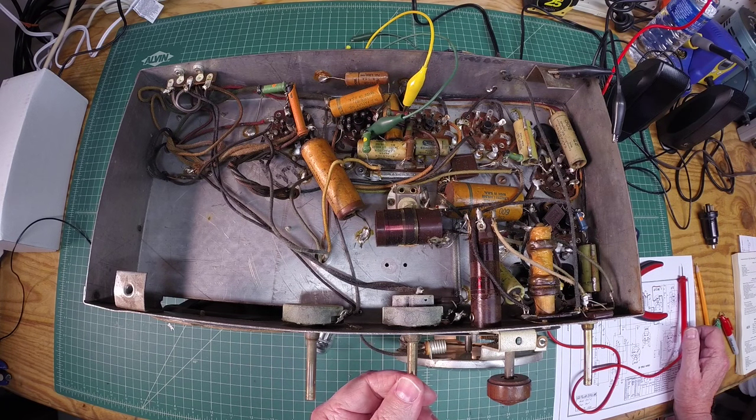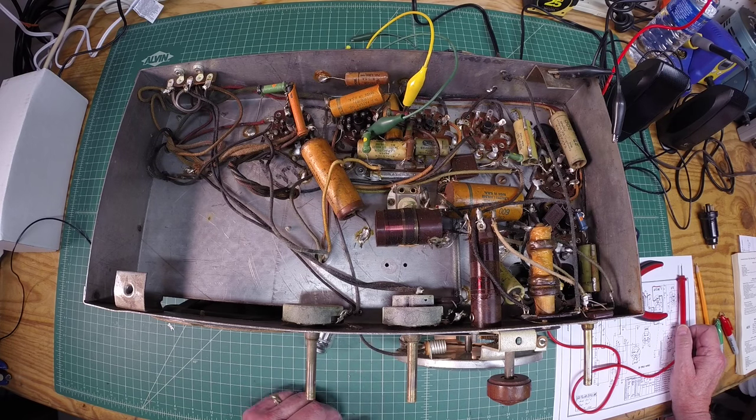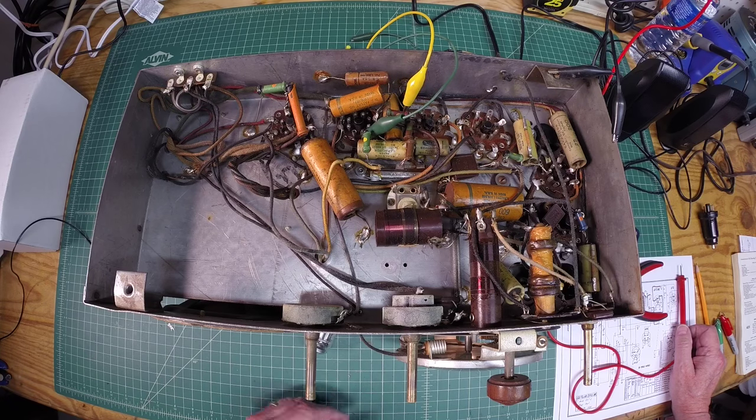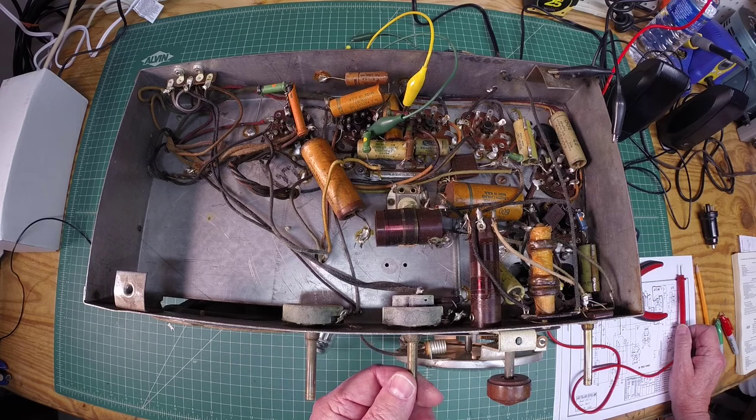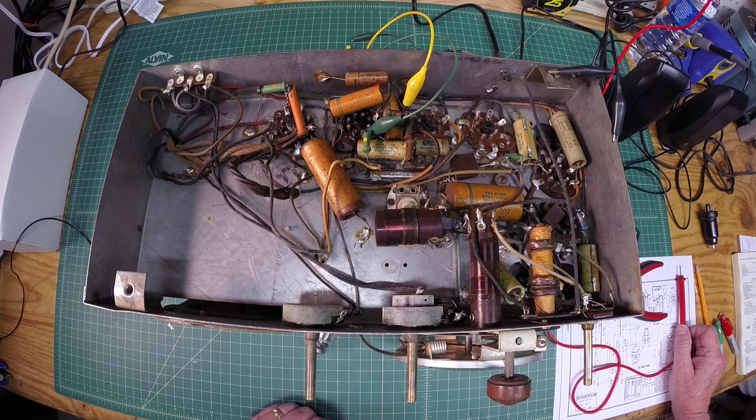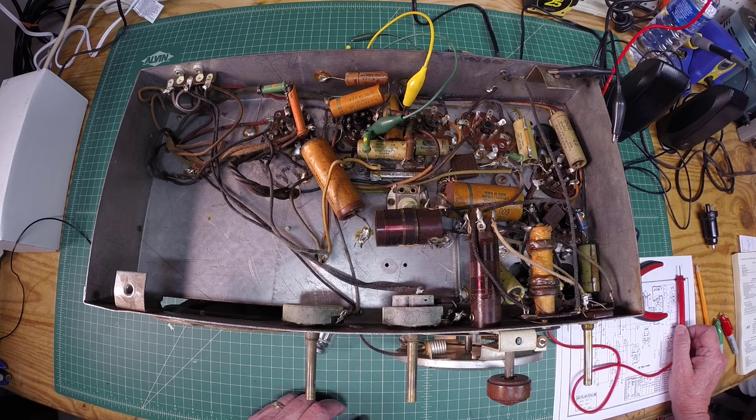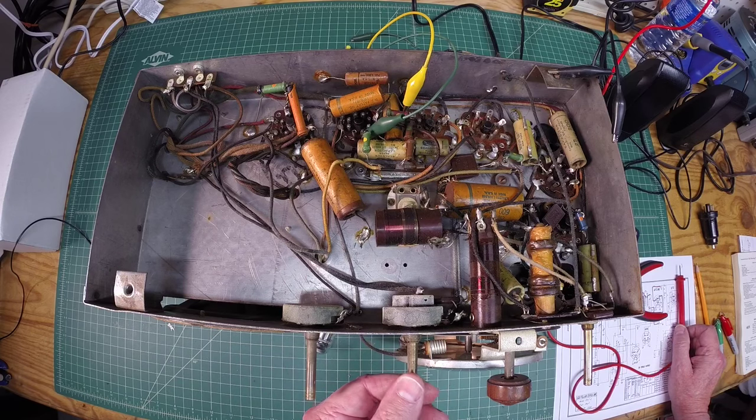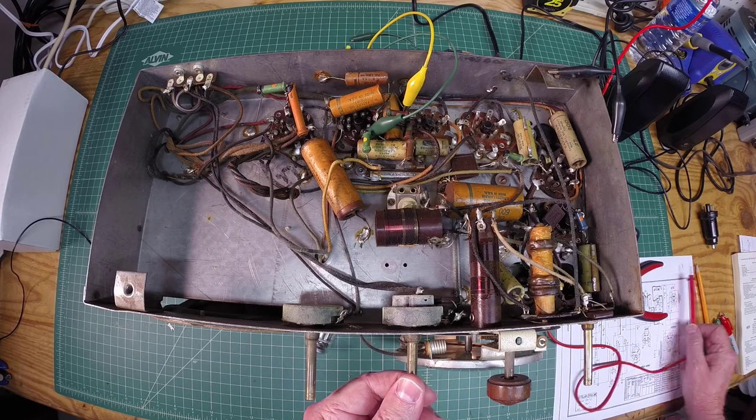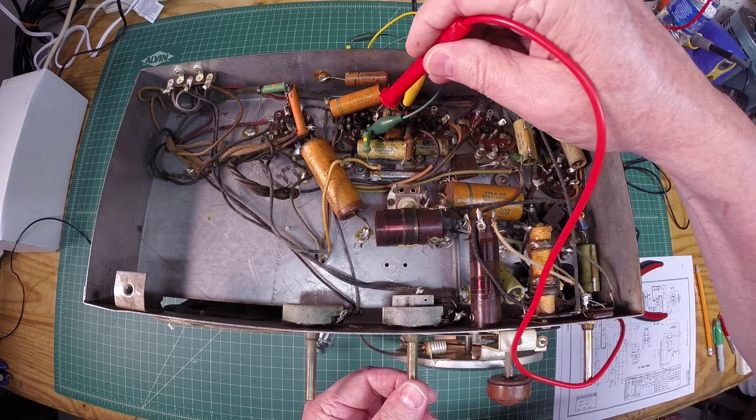Okay. I'm sure there's more caps bad than this. But showing how to use the signal tracer, doing a little divide and conquer. And it appears that the coupling cap, it sits between the 6F5 and the 6F6, it was defective. And let's look now and listen to the output tube here as well on the little signal tracer.